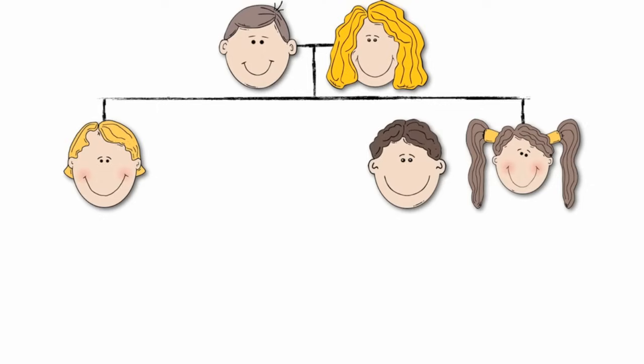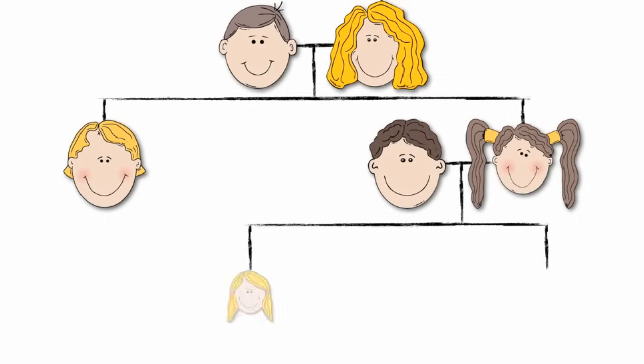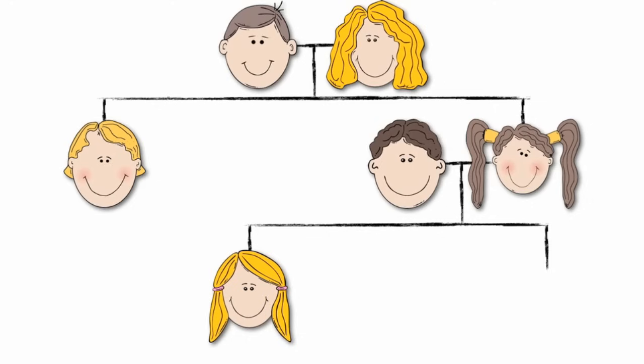met a brown-haired male. They too fell in love, decided to get married, and reproduced. In their family they had two children. Their firstborn was a blonde-haired female and their second born was a brown-haired female.